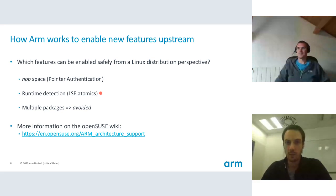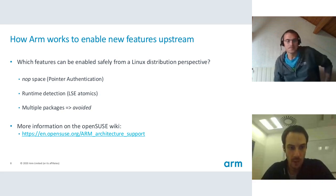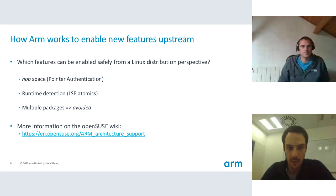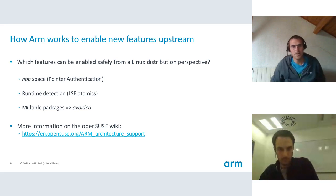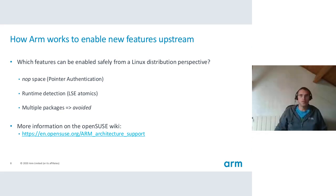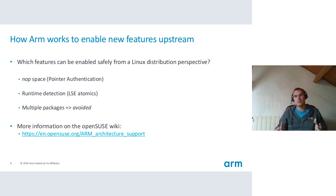A question from the chat: with all these features available, how is a common base for servers identified? Could you speak about SBSA and SBBR and ARM System Ready SR, and how they fit in this picture? Can they be used as a support target when looking at ARMv8 as a server platform? SBSA and SBBR are a different topic — it's more about booting and minimum services to support on the ARM space, so it's quite different from these architectural features.